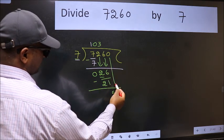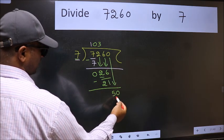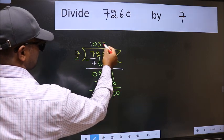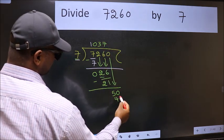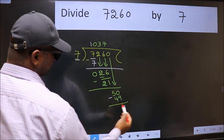After this, bring down the beside number. So 0 down. 50. A number close to 50 in the 7 table is 7 times 7 is 49. Now we subtract and get 1.